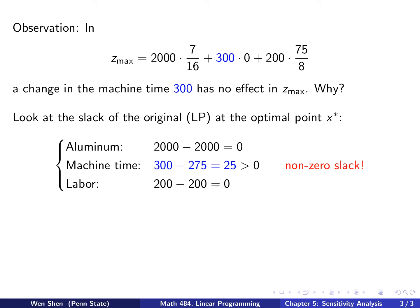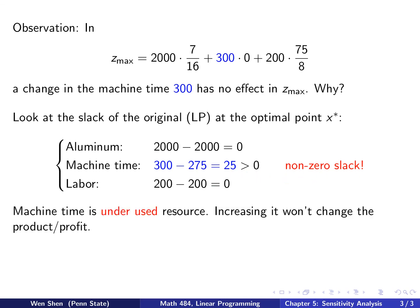Let's take a look at the original LP problem and examine the slack at the optimal point X* = (25, 25). For aluminum, I get 2000 minus 2000 equals zero — no slack. For machine time, I get 300 minus 275, giving a slack of 25, which is strictly positive. For labor, I get zero again. Machine time has slack, meaning at the optimal solution X*, machine time is an underused resource. There is additional time available, and therefore increasing it won't change the profit.